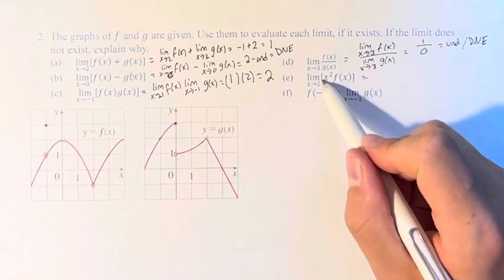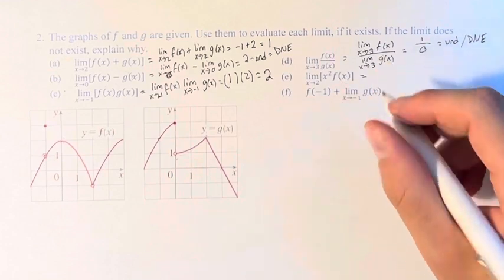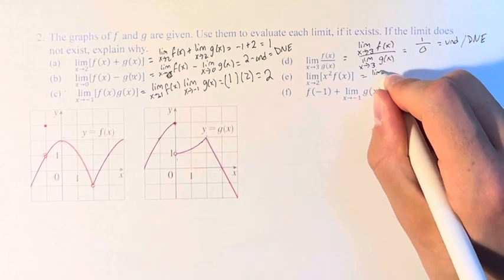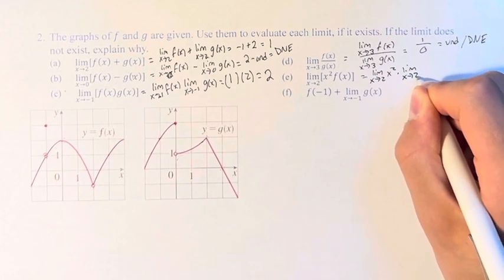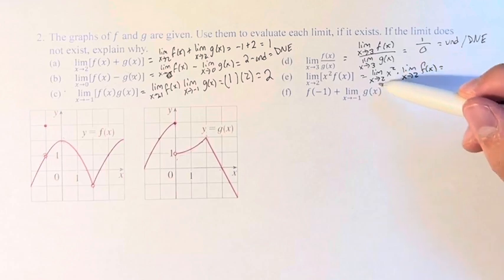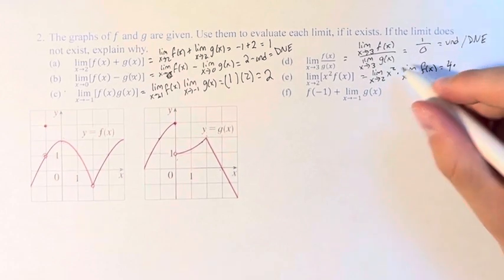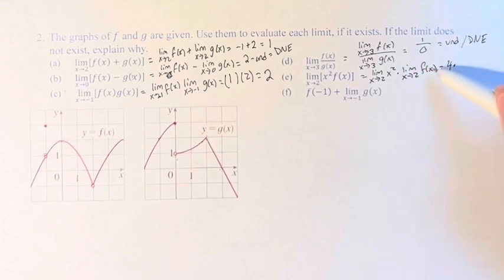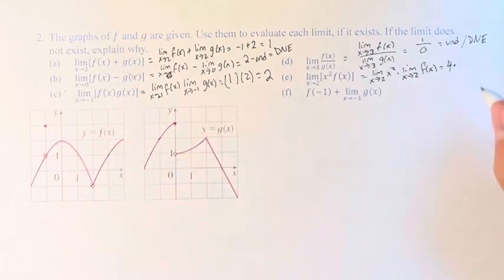As x approaches 2 for x squared times f(x), we take the limit as x approaches 2 of x squared times the limit as x approaches 2 of f(x). As x approaches 2, x squared just goes to 4 — we can calculate that straight up because 2 squared is 4. And then as x approaches 2, f(x), as we found earlier, goes to this point right here at negative 1. 4 times negative 1 is negative 4.